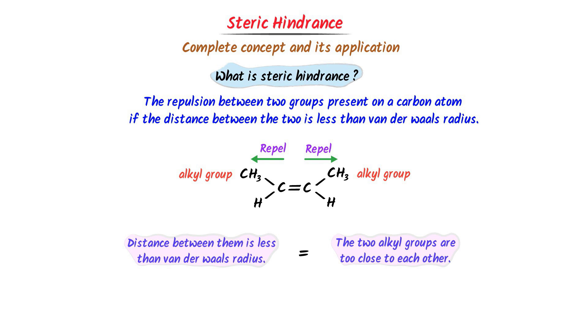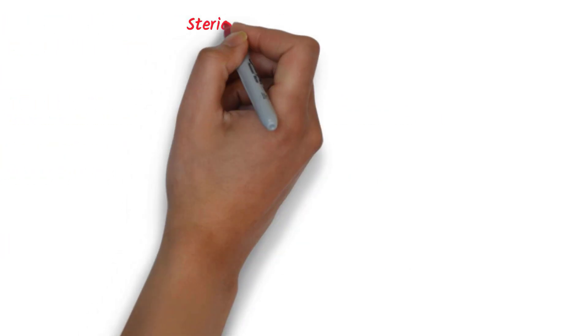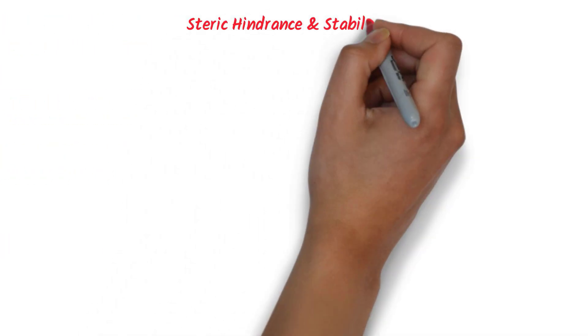Thus, we learn that steric hindrance is the repulsion between two groups in a molecule. Now we will learn one important concept: steric hindrance and stability.